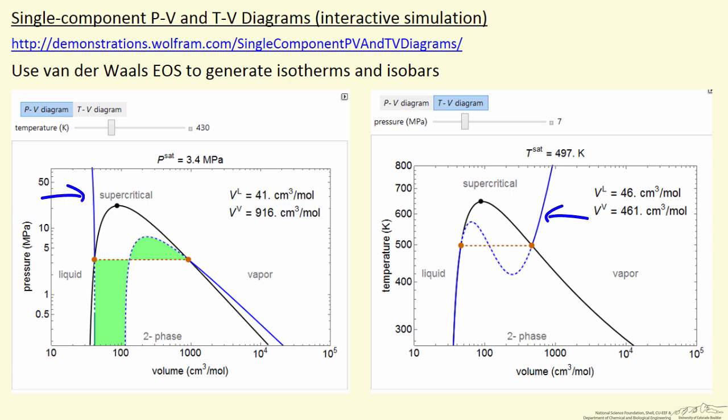So the blue line on the left and on the right corresponds to the van der Waals equation of state, including the dashed blue line. The dashed blue line, however, does not correspond to physical reality.